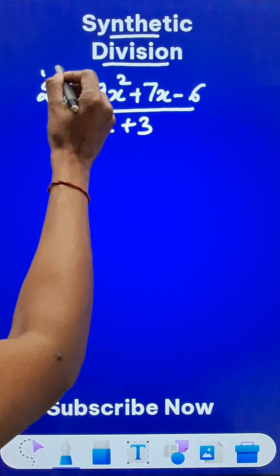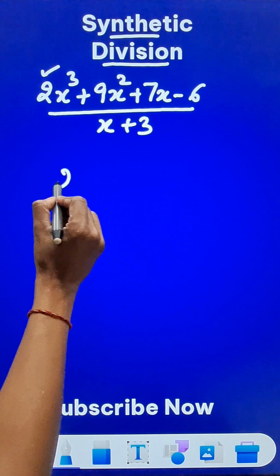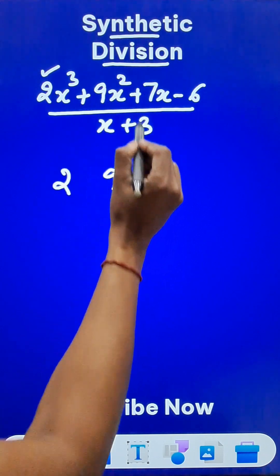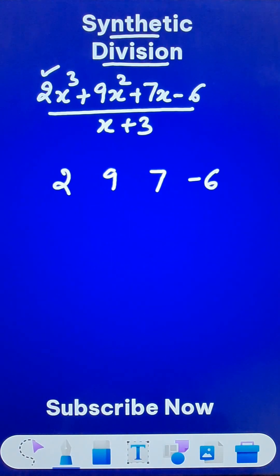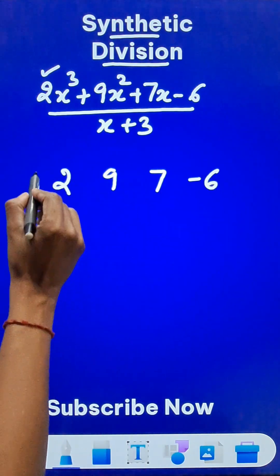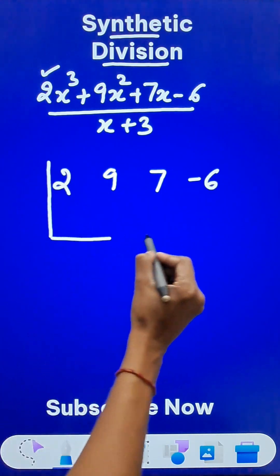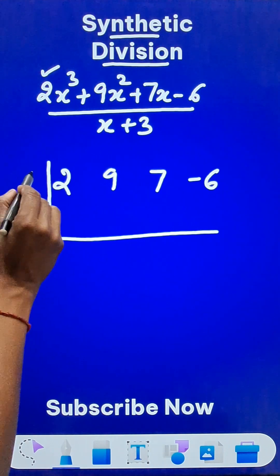How do you do this? The coefficients here are 2, then we have the 9, then we have the 7, and finally we have -6. You have to write all those coefficients lined up like this and then put a line here and a line here, and then on the left hand side,